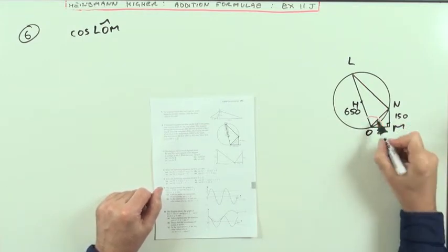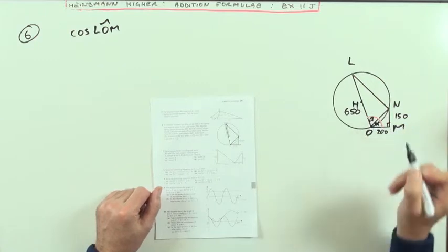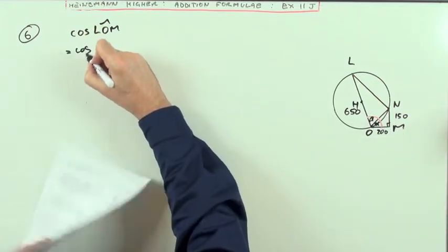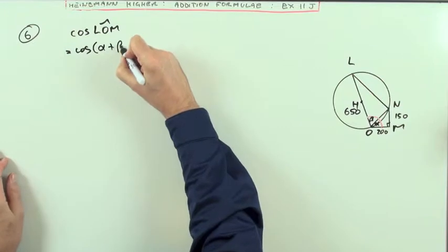So it's made up of two parts. I'll give them names, I'll call that alpha and beta, so it means I'm effectively looking for what's cos alpha plus beta.